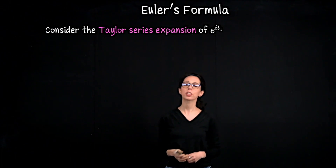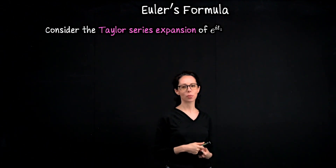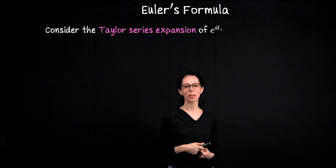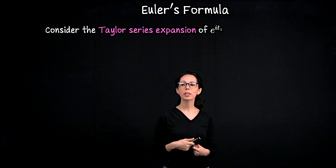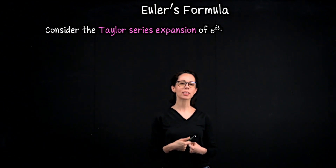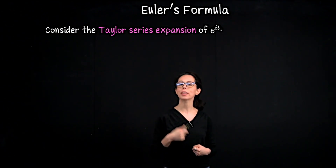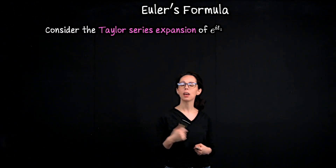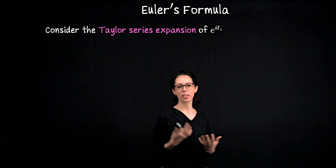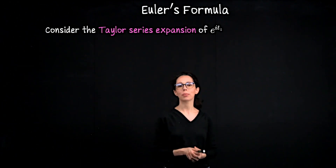In this lesson we are going to look at Euler's formula and some consequences of Euler's formula. We're going to get to this formula first by considering the Taylor series expansion for e to the it, where i is the imaginary number and t is some real number.